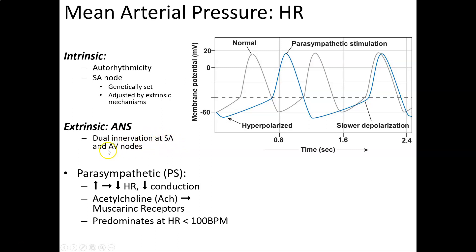Extrinsically, the ANS has both sympathetic and parasympathetic branches going to both the SA node and the AV node — dual innervation. For the parasympathetic, it's inversely related to heart rate: if parasympathetic activity goes up, heart rate goes down. It does this by stimulating the release of acetylcholine, which goes to muscarinic receptors and slows the heart. The parasympathetic system tends to be predominant at heart rates of 100 beats per minute or less.